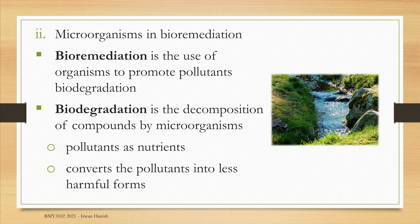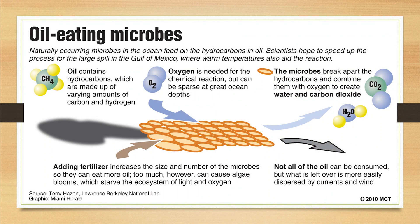We can also use microorganisms in bioremediation, where we use them to biodegrade pollutants. Biodegradation is when microorganisms eat up the pollutants as nutrients, and that biochemical process releases less harmful forms of the chemical compounds. A classic example is oil-eating microbes used to clean up oil spills in the ocean. Microbial species from Pseudomonas or Marinobacter can eat chemical compounds from petroleum as part of their diet, breaking down hydrocarbons and converting them to water and CO2. Their biodegradation doesn't need to be 100% — they just need to degrade the petroleum enough so that the leftovers can be dispersed naturally by the ocean current.